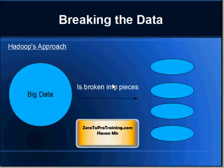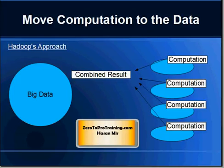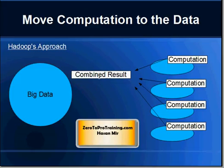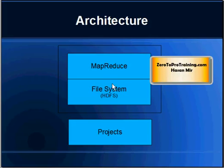Hadoop takes a very different approach than the traditional enterprise approach. It breaks the data into smaller pieces, and that is why it is able to deal with Big Data. Breaking the data into smaller pieces is a good idea, but then what? It also breaks the computation down into smaller pieces and sends each piece of computation to each piece of data. The data is broken down into equal pieces so that these child computations can be finished in equal amounts of time. Once all the computations are finished, their results are combined together and sent back to the application as a combined overall result. The purpose of this video was to explain the challenges produced by Big Data and how Hadoop is addressing those challenges. For details on the architecture of Hadoop — which consists of MapReduce, File System, and other projects — please take a look at the other videos.